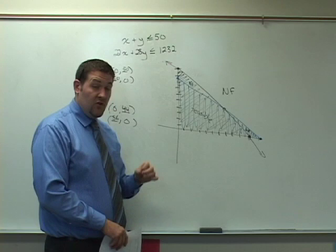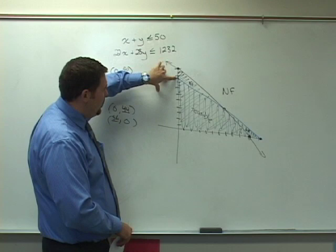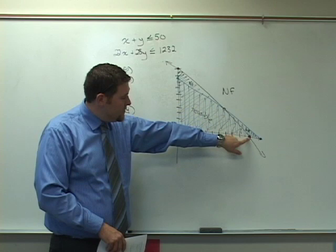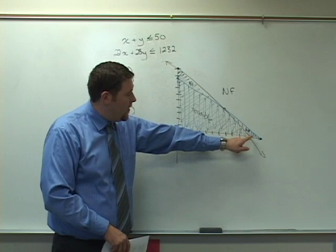The vertices are the corners of your doubly shaded region. So one of those corners right here is on the y-axis. Another corner is this intersection point, and a third corner of the doubly shaded region is this x-axis, x-intercept here.